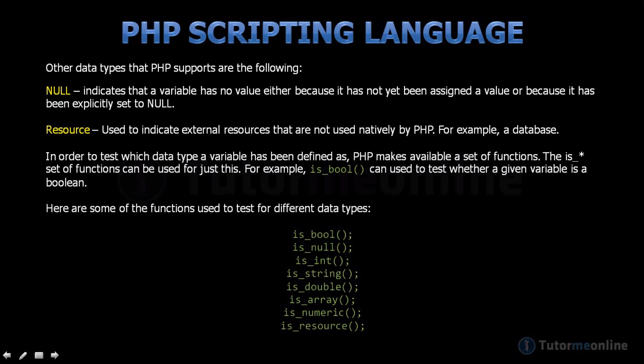PHP has a set of built-in functions which you can use to test which data type a variable has been defined as. The is_ set of functions can be used for just this. For example, the is_bool function, which can be used to test whether a given variable is a boolean. Below are some examples of the different functions that PHP provides to test for different data types.